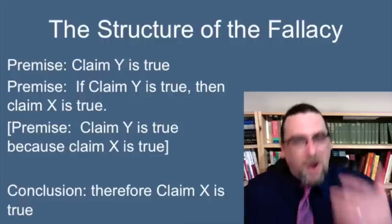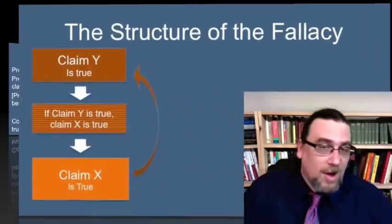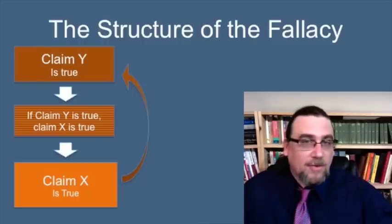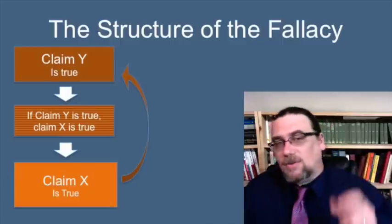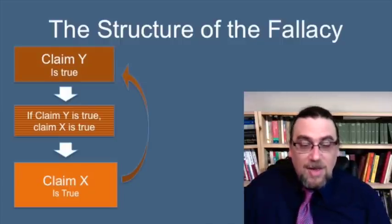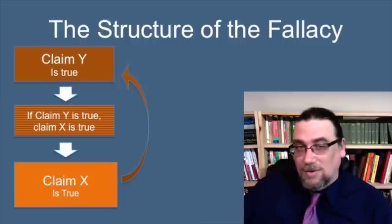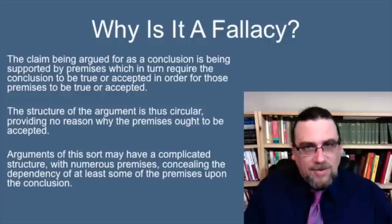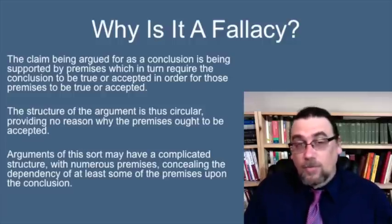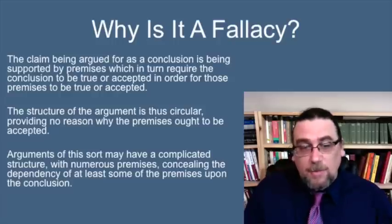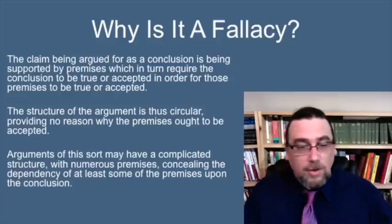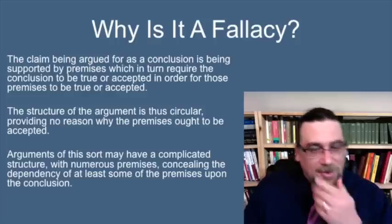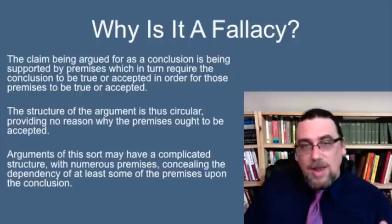Let's look at the structure. We begin with the premise that claim Y is true, and that leads us to: if claim Y is true, then claim X is true. However, what's being suppressed is that claim Y is true precisely because claim X is true — there's the circularity. The conclusion that claim X is true doesn't really follow unless you grant claim X in the first place, which is not what you're supposed to do since it's the argued-for conclusion.